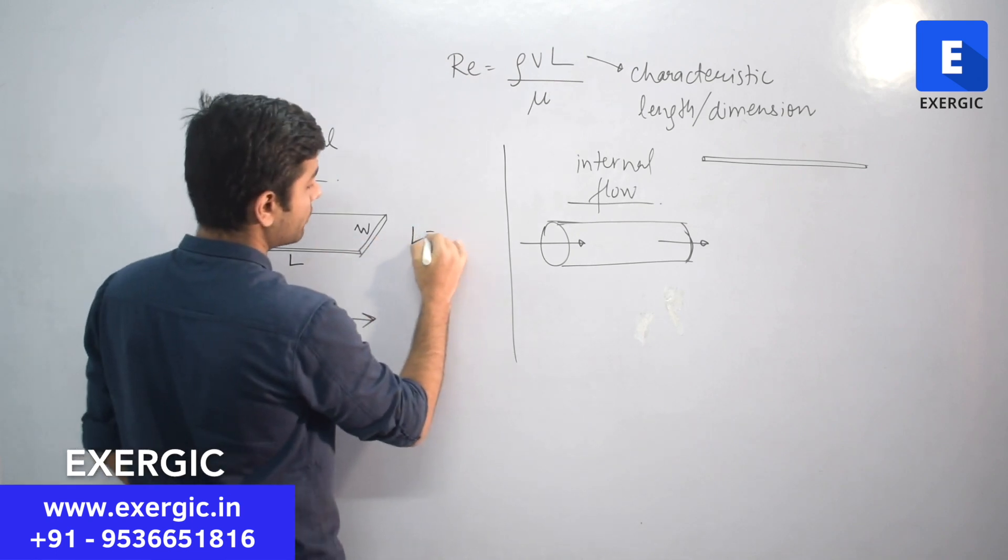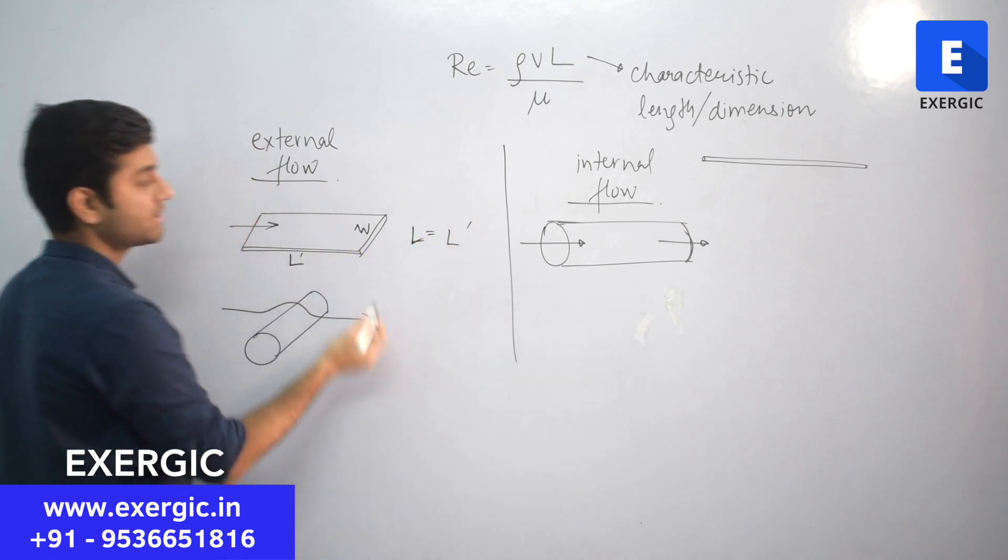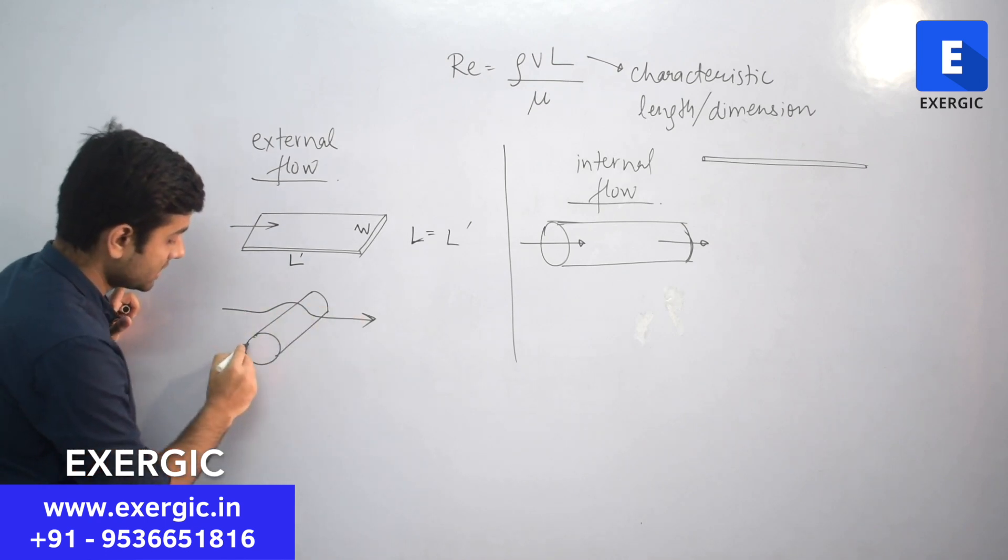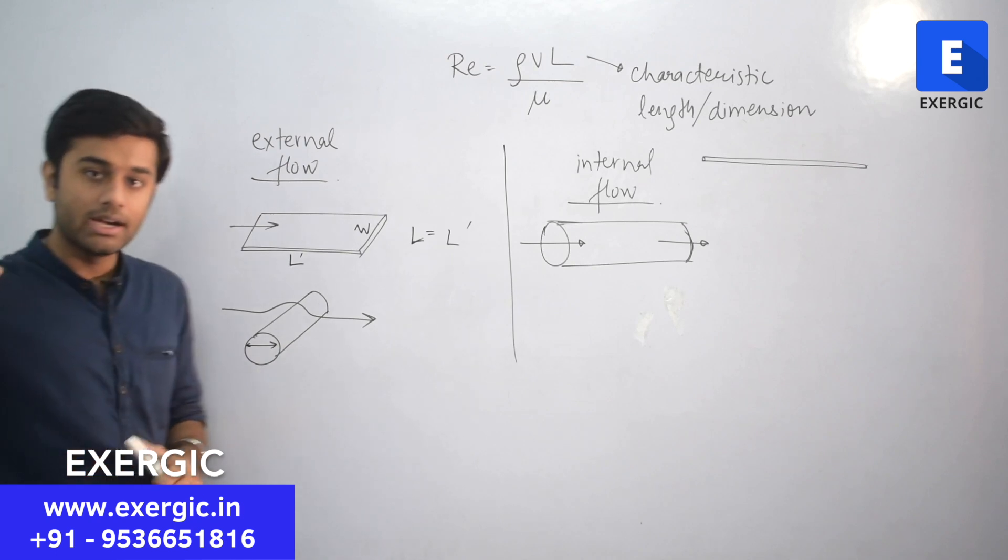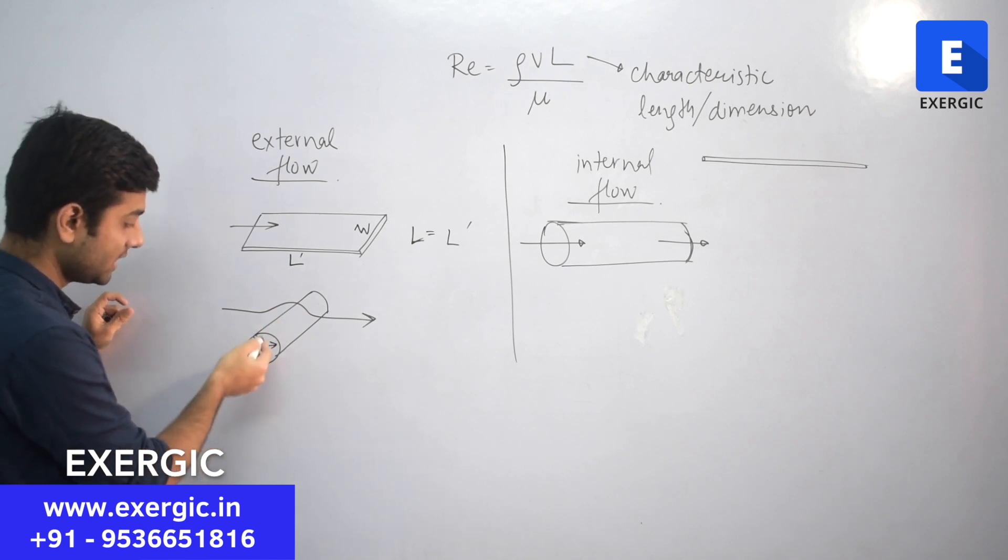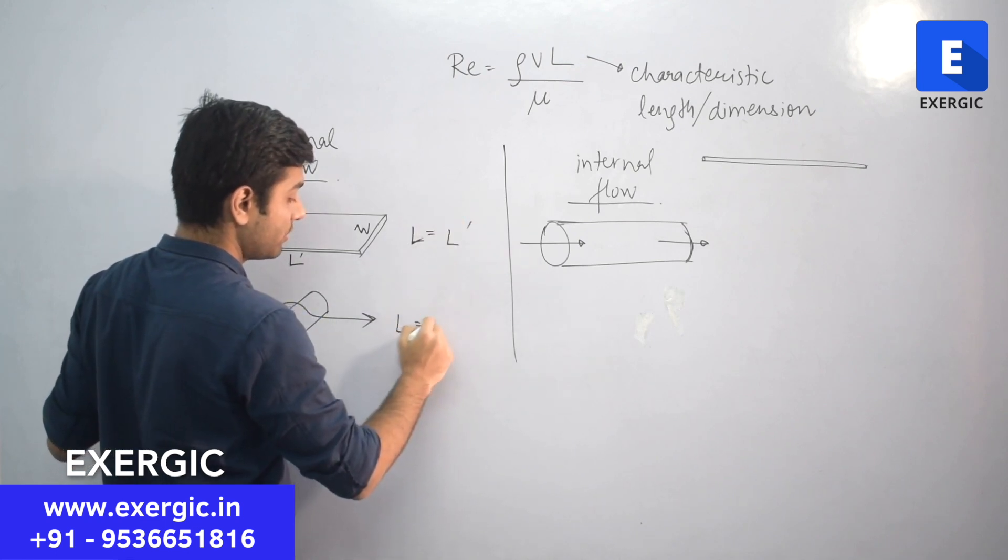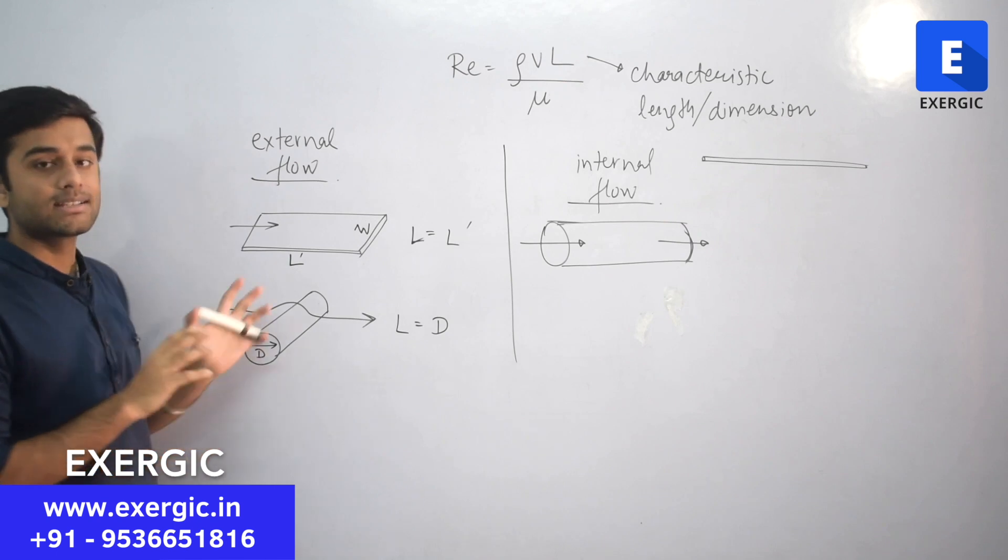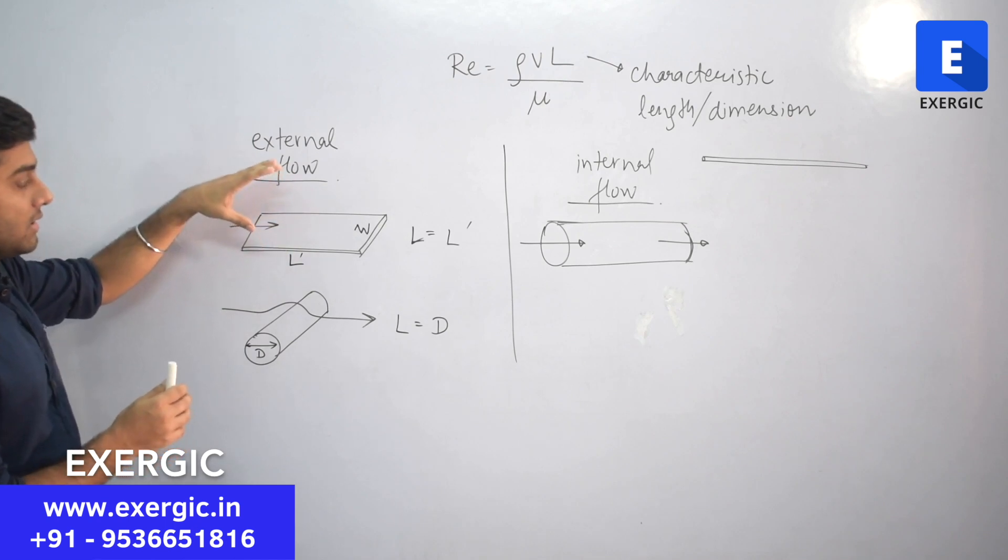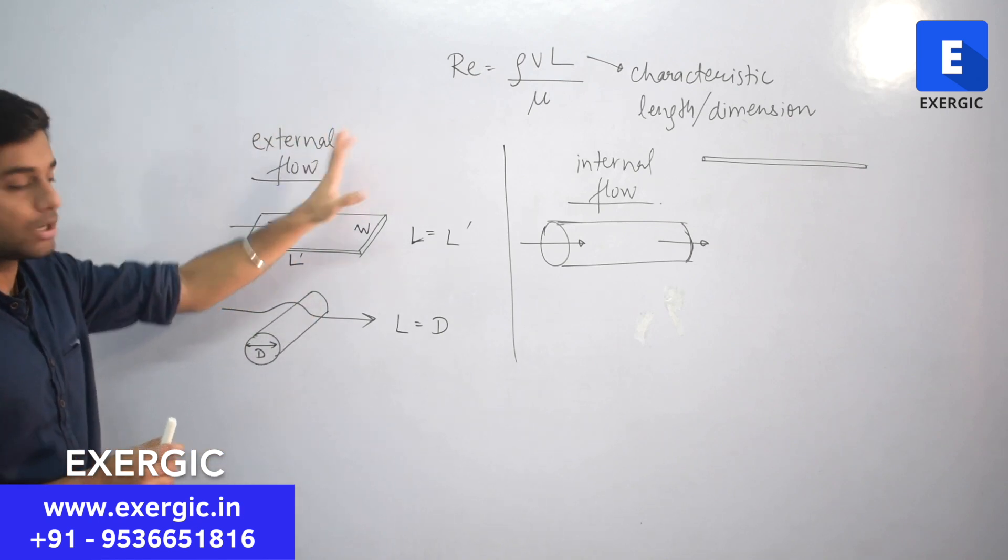For this case, the major dimension along the direction of flow is this, the diameter. Even from the top, it has to travel a distance. So, the projection of that distance is equal to the diameter of this particular cylinder. So, for this case, characteristic dimension or characteristic length is equal to its diameter. So, for any external flow, you just have to see that the flow is happening over a surface. So, the dimension along the flow of that surface will be the characteristic length or characteristic dimension for Reynolds number.